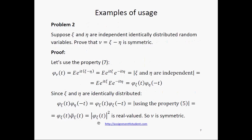And finally, we get the squared absolute value of phi. Obviously, it is real-valued. So, according to property 7, nu is a symmetric random variable.